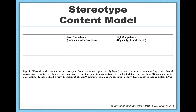The first dimension along which the content of stereotypes varies is competence — some groups are stereotyped as being highly competent, whereas others are viewed as relatively incompetent. The second dimension is warmth — some groups are stereotyped as being very warm, very friendly and trustworthy, whereas others are perceived as being relatively cold, unfriendly, or untrustworthy. We can combine these two dimensions to form four groups, labeled according to where they fall on the stereotype dimensions of competence and warmth.